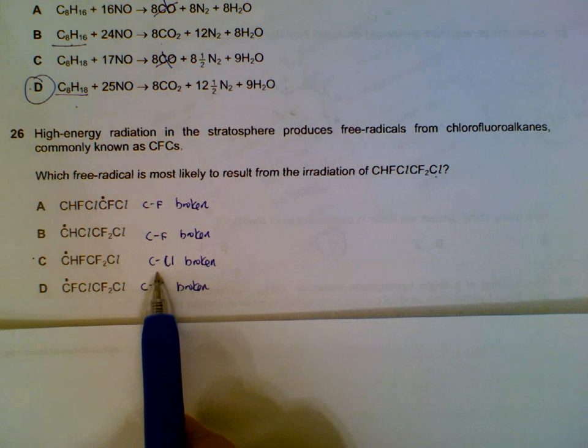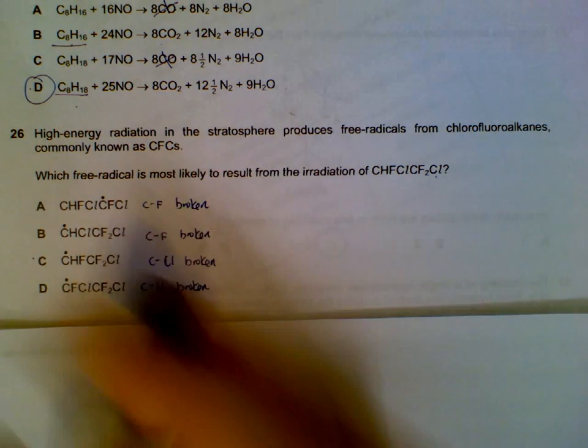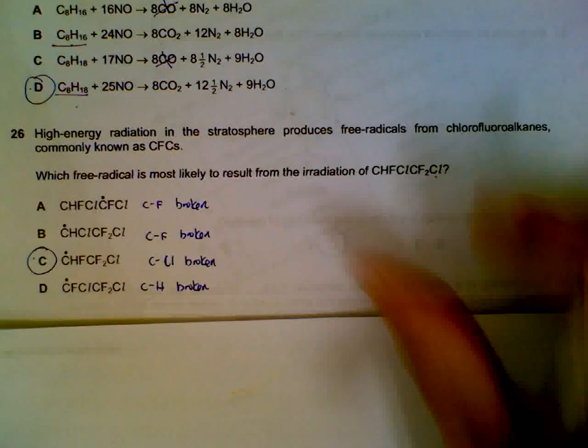Of all this, the C-Cl bond, the chlorine bond is the easiest to be broken based on your bond energy. So C is the one that is most likely to happen.